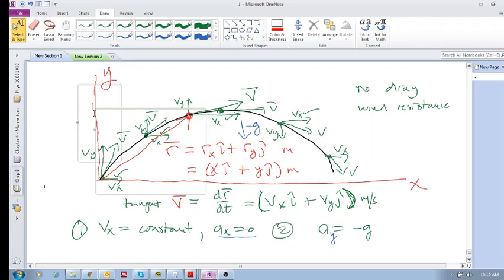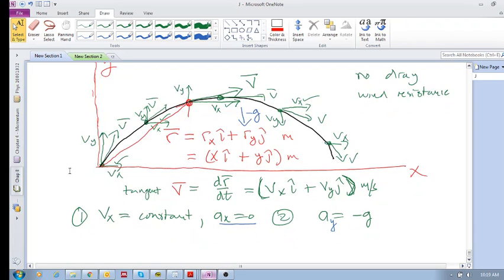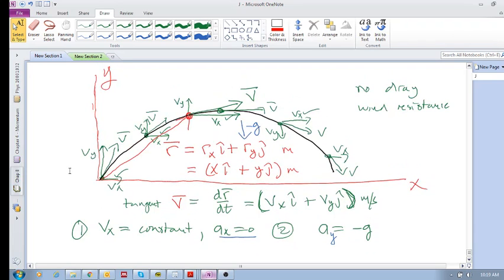But what happens to the vertical component? Well, the vertical component is exactly the same as a ball just simply being thrown up, slowing down, stopping, and then coming down. Right? If you just looked at the vertical component, that's what it would be.